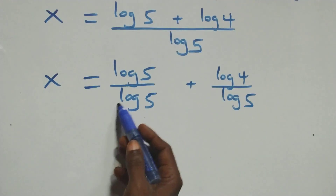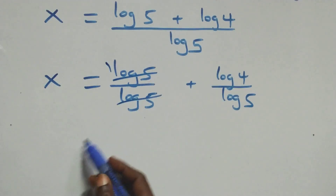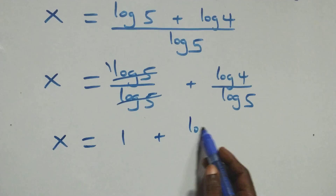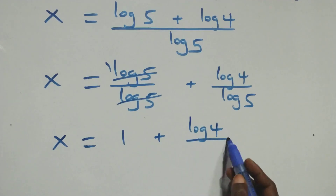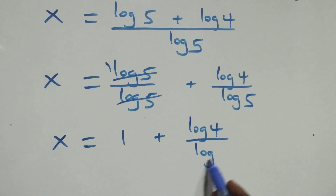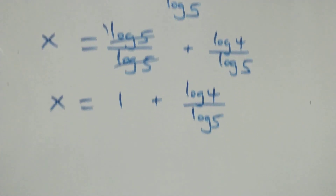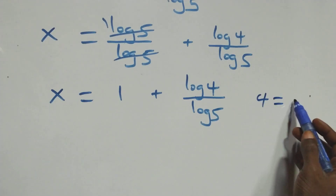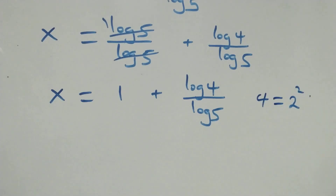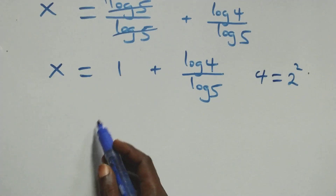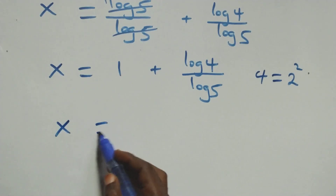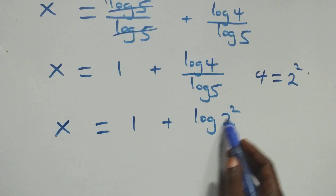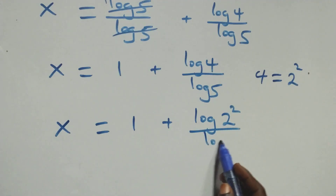Then here, log 5 cancels with log 5 leaving 1, which implies x equals to 1 plus log 4 over log 5. Next step: we can write 4 as 2 times 2, that is 2 squared. Then what we have here becomes x equals to 1 plus log(2 squared) over log 5.